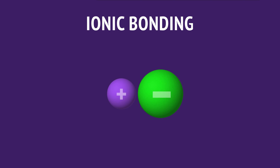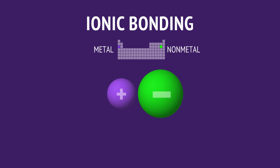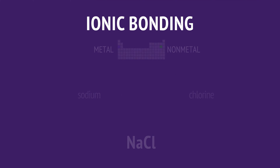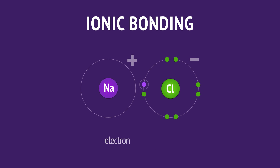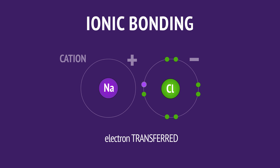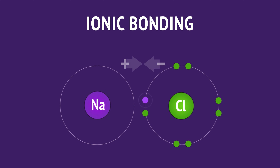Ionic bonds occur between metals and nonmetals, like the bonding between sodium and chlorine in sodium chloride. Ionic bonding involves the transfer of valence electrons from one atom to another. The sodium atom has lost an electron, forming a positive ion or cation. And the chlorine atom has gained this electron, forming a negative ion or anion. The ionic bond is the electrostatic attraction of these oppositely charged ions.